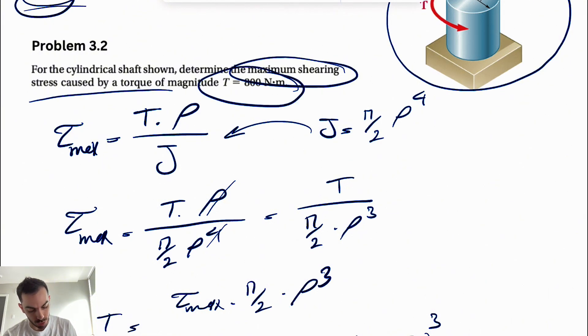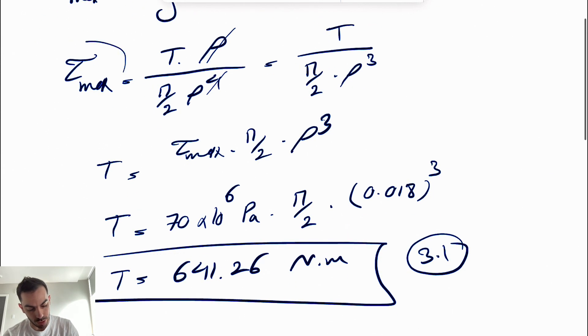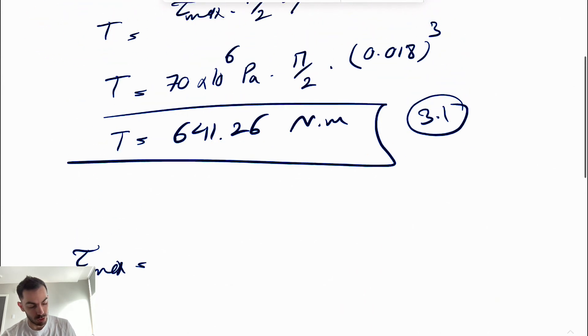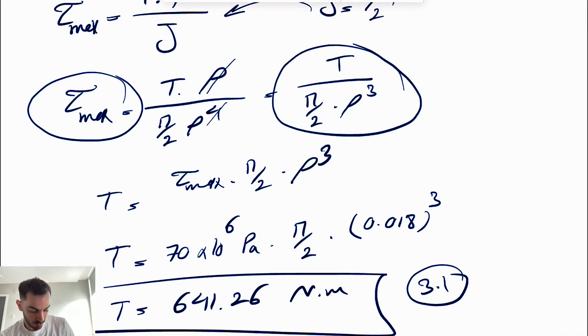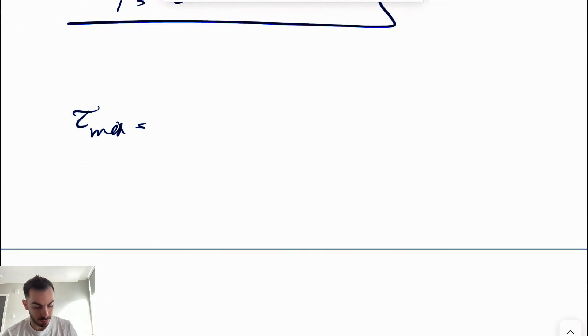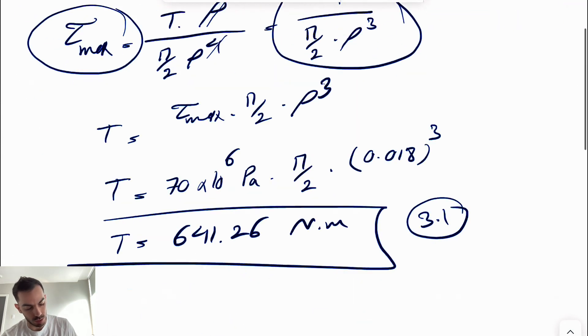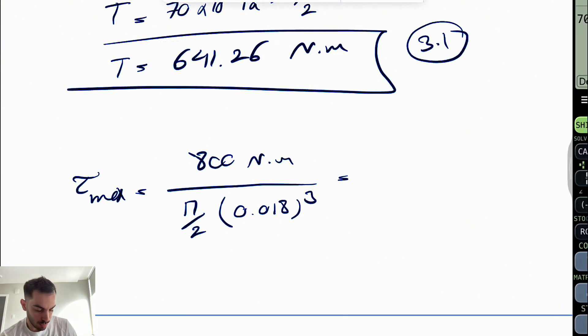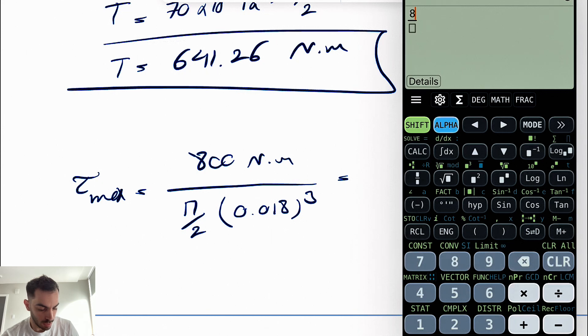Let's move on to the second question. It's very similar - we're given the torque of 800 newton meters and need to find the maximum shearing stress. We'll use the same formula: τ_max = 800/(π/2·ρ³) with the same radius to the power of three.